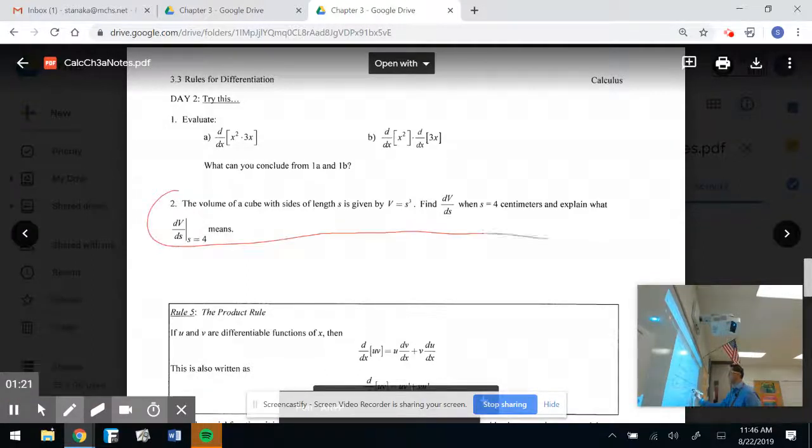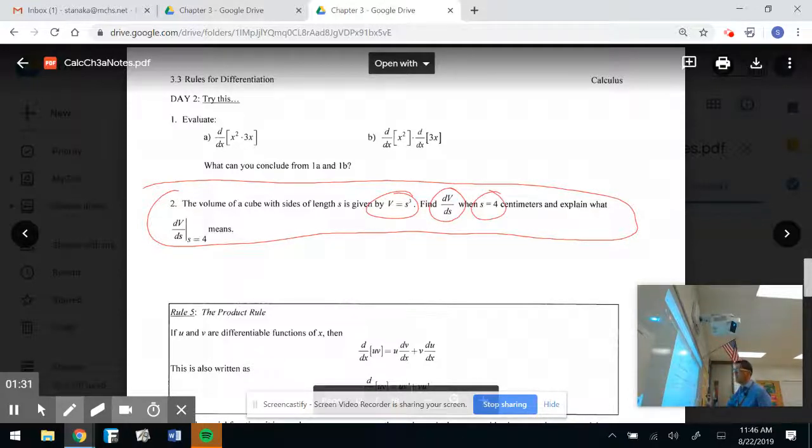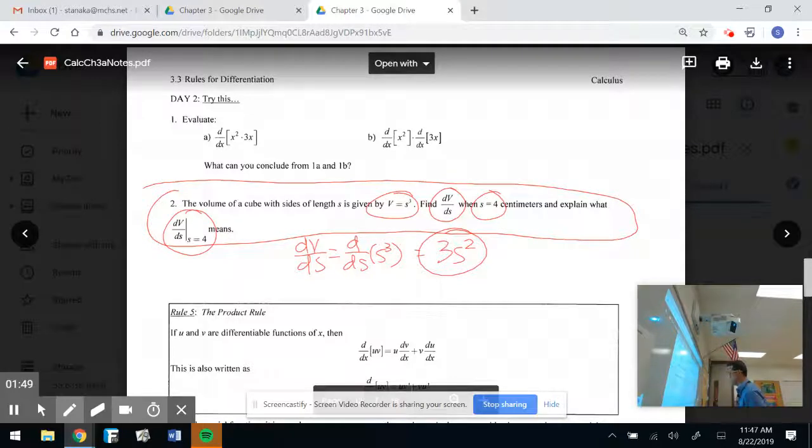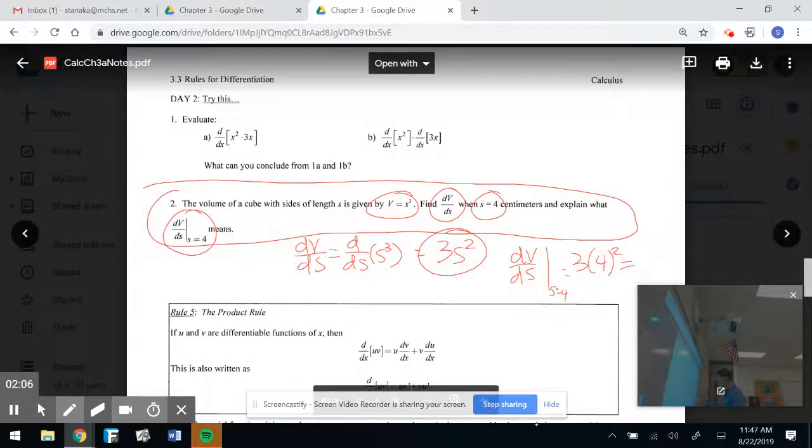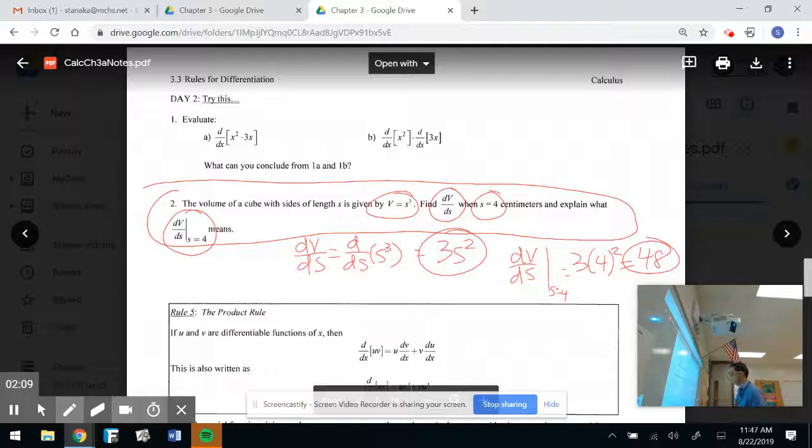The volume of a cube with sides of length s is given by this function. Find dv/ds when s is equal to 4 centimeters, and tell me what the heck this bad boy right here means. So first, let's find the derivative of v with respect to s, which would simply be the derivative of v, which happens to be s cubed with respect to s. So that would be a little 3s squared. That's the derivative.